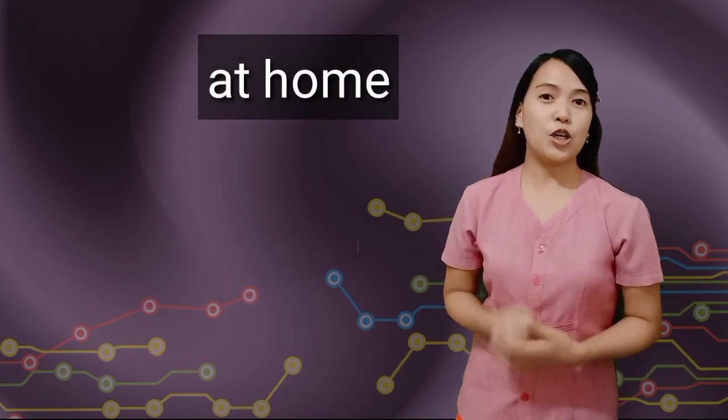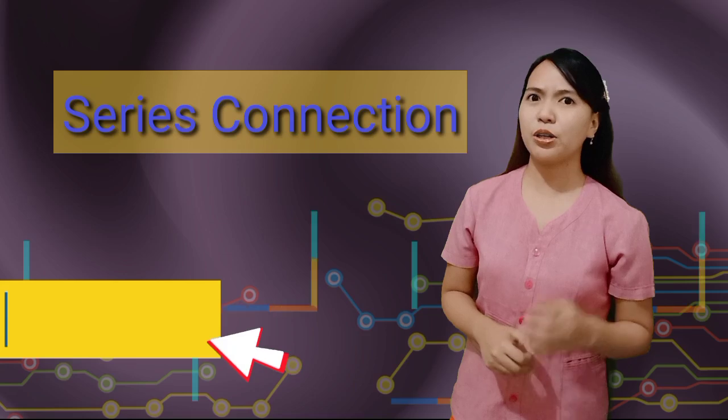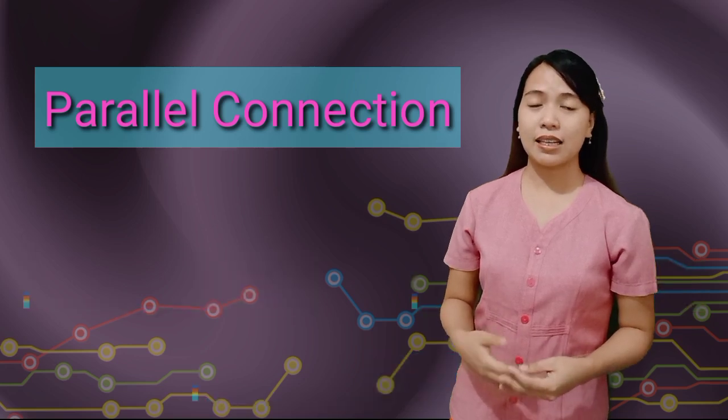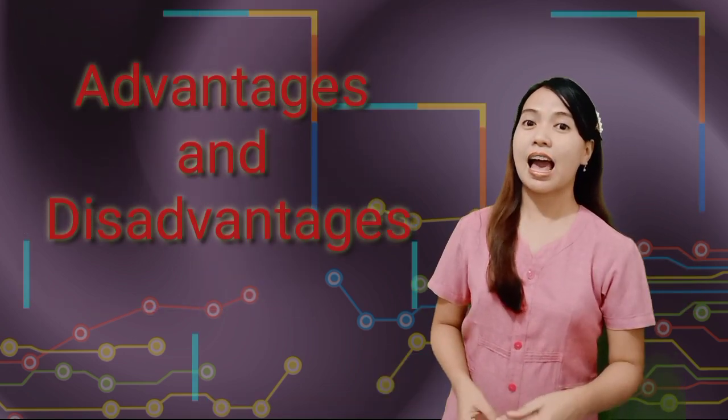Have you ever wondered what type of circuit connection is present at home? You may say it is series, as you turn on any switch that controls a single bulb. Or you may say it is parallel, because as you turn off an appliance, the other appliances are still in operation. But did you know that a circuit connection that is present at home is actually a combination of the two? The series and the parallel connection. Imagine if all the electrical wiring in your home is controlled by one switch. What do you think will happen if one of the appliances malfunctions? Series connection and parallel connections have advantages and disadvantages. Let's find out.